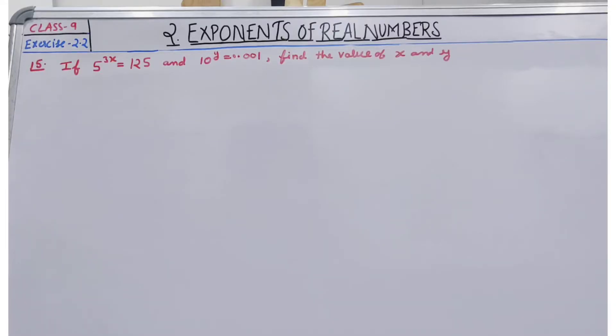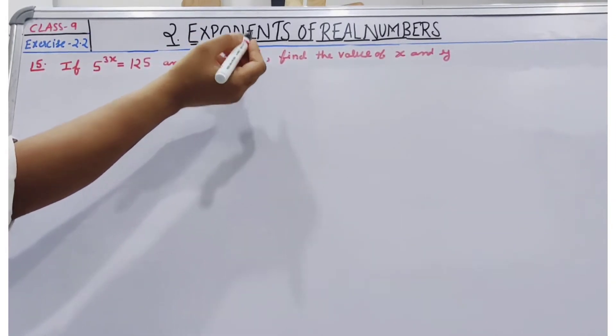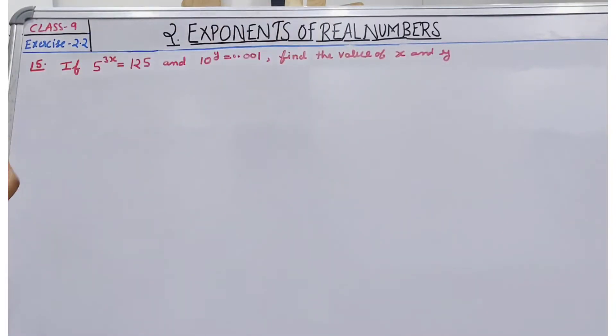Hello everyone, today we will discuss exercise 2.2 of class 9 from RD Sharma, question number 15 of this exercise. According to this question, if 5 to the power 3x is equal to 125 and 10 to the power y is equal to 0.001, find the value of x and y.